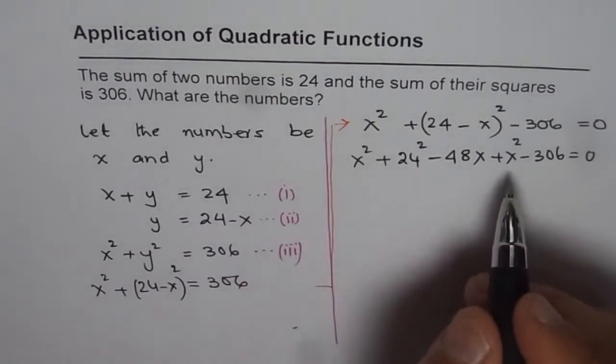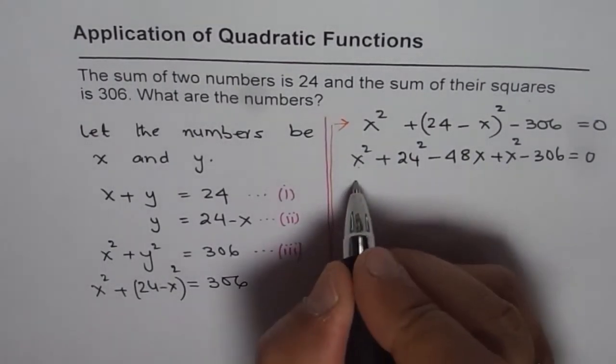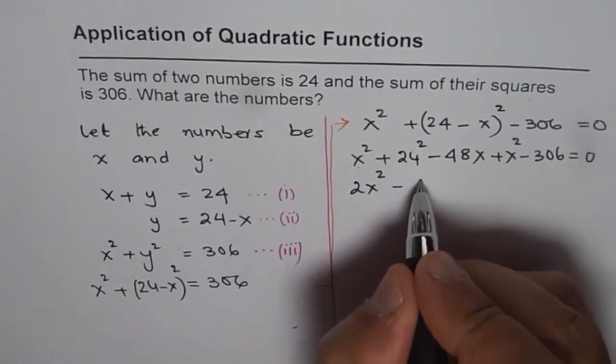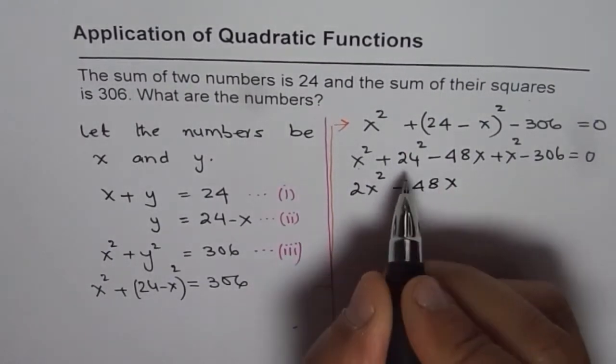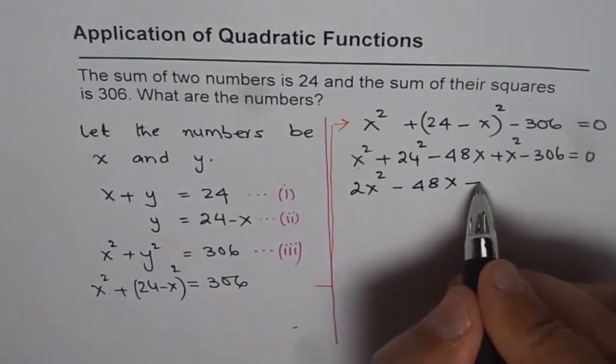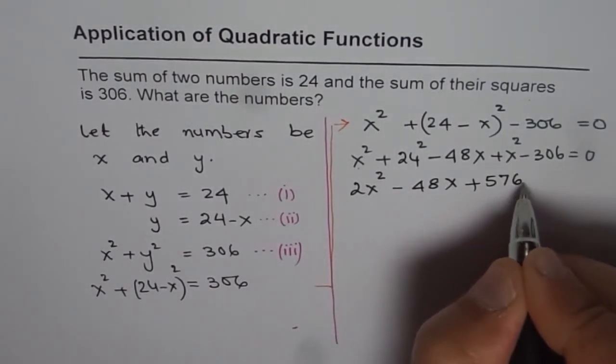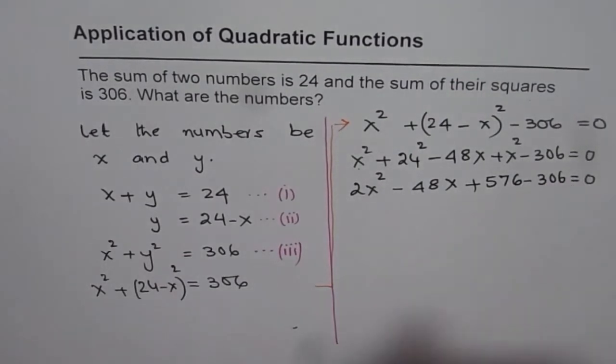Now we will rearrange the terms. x squared plus x squared is 2x squared. So we have 2x squared, x term is minus 48x, and the numbers are 24 squared which is 576 minus 306 equals 0.